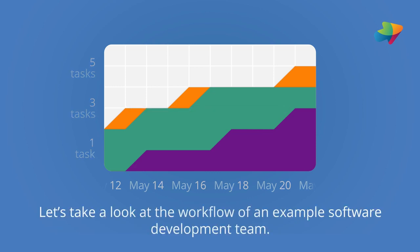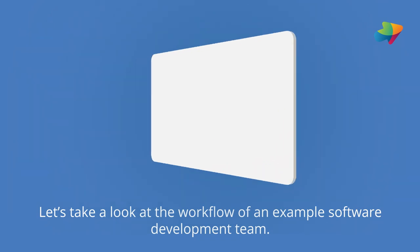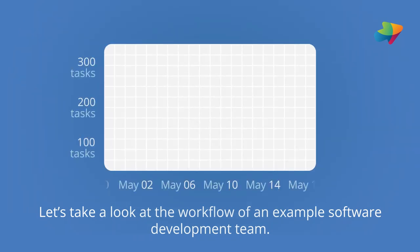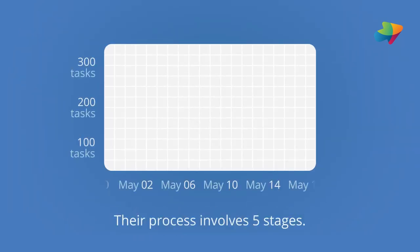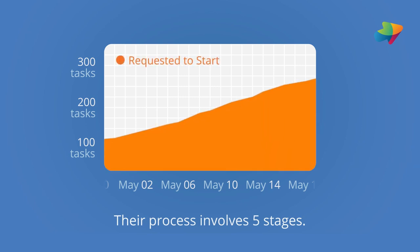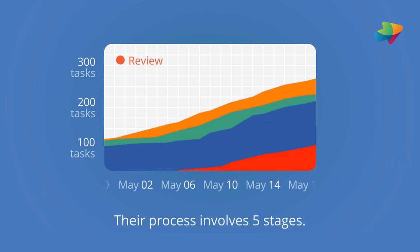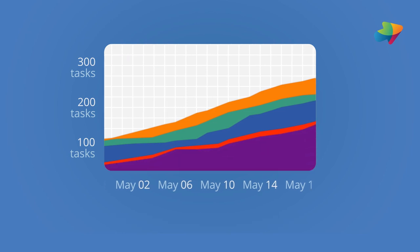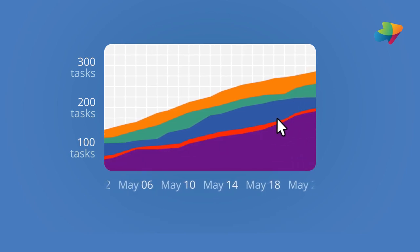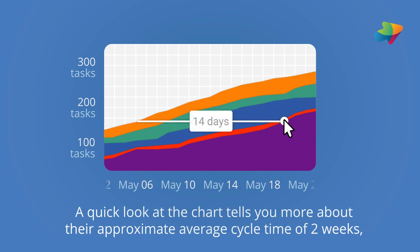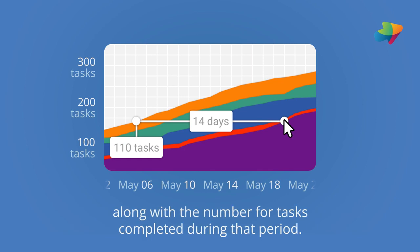Let's take a look at the workflow of an example software development team. Their process involves five stages. A quick look at the chart tells you their approximate average cycle time of two weeks, along with the number of tasks completed during that period.